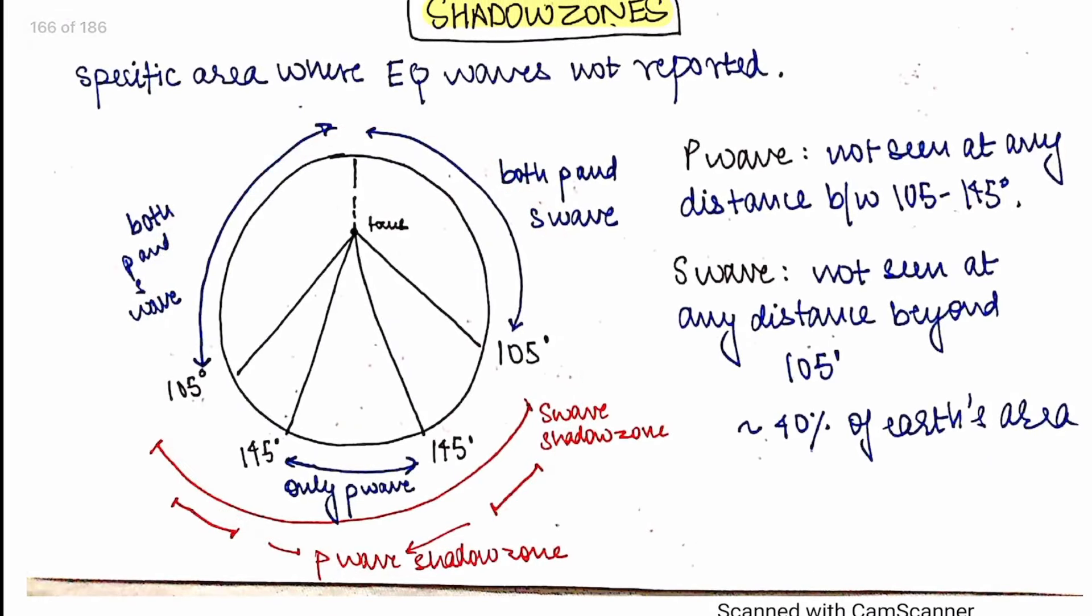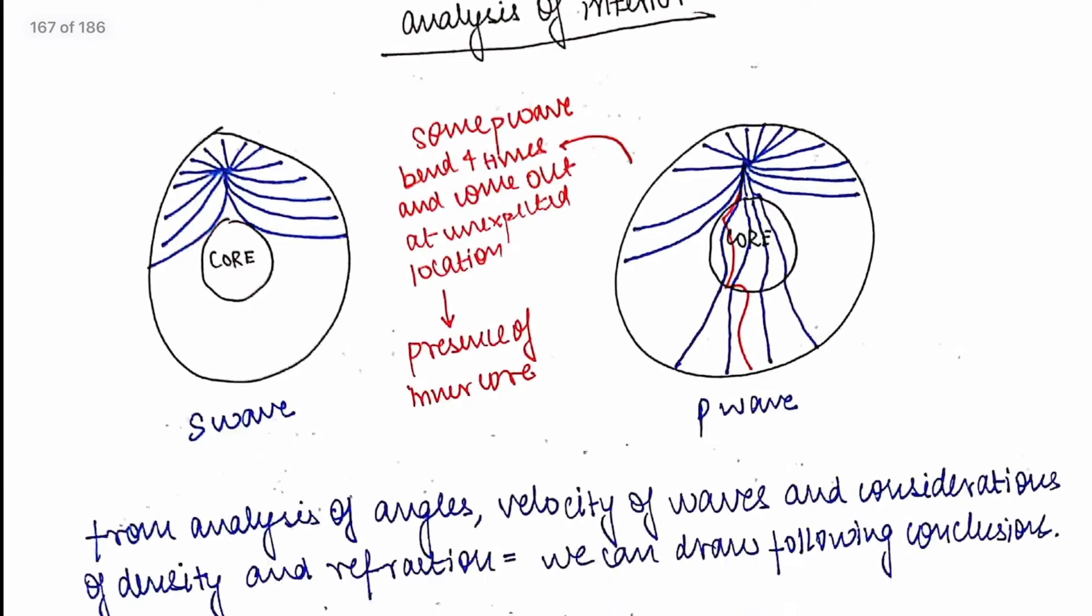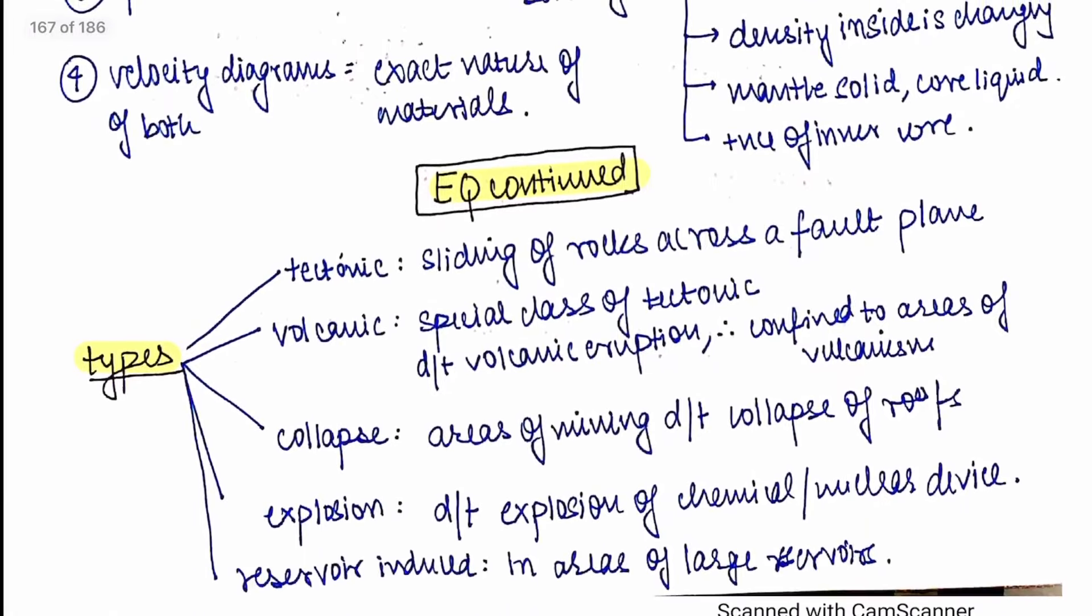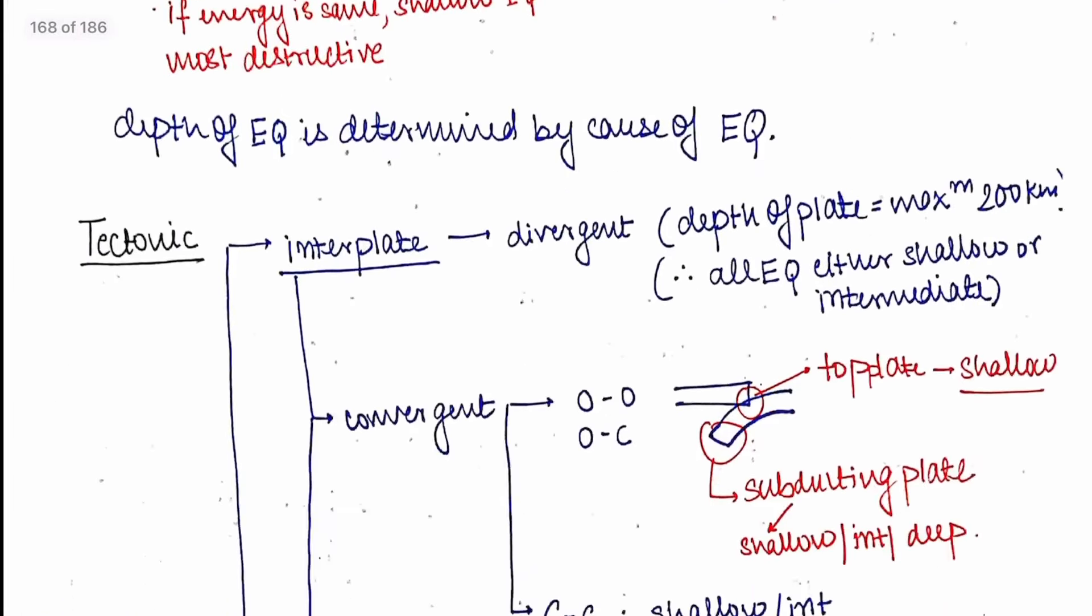Then we talk about shadow zones. This diagram is directly from the NCRT. And again of course GC-Liong has also been integrated, like what angles of earthquake wave tell us, where S wave shadow zones are, what that tells us about the interior of the earth etc. These things are in GC-Liong.